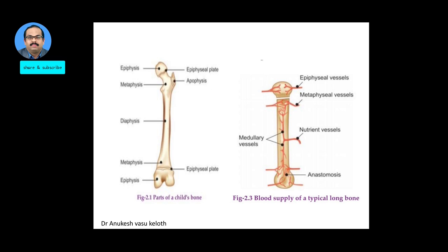Regarding the parts of a long bone, since our discussion is based on fractures of a long bone: you have the ends known as the epiphysis on either side, and then the central or shaft portion known as the diaphysis. The portion adjacent to the diaphysis on either side is referred to as the metaphysis. Between the epiphysis and the metaphysis, you have a plate known as the epiphyseal plate.